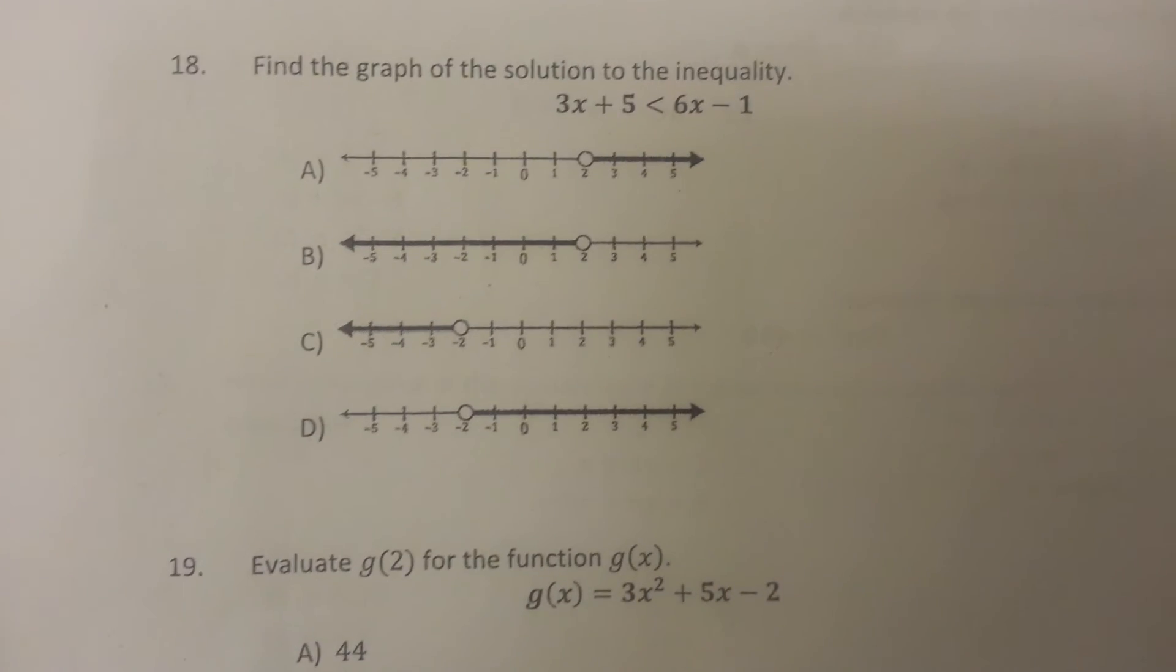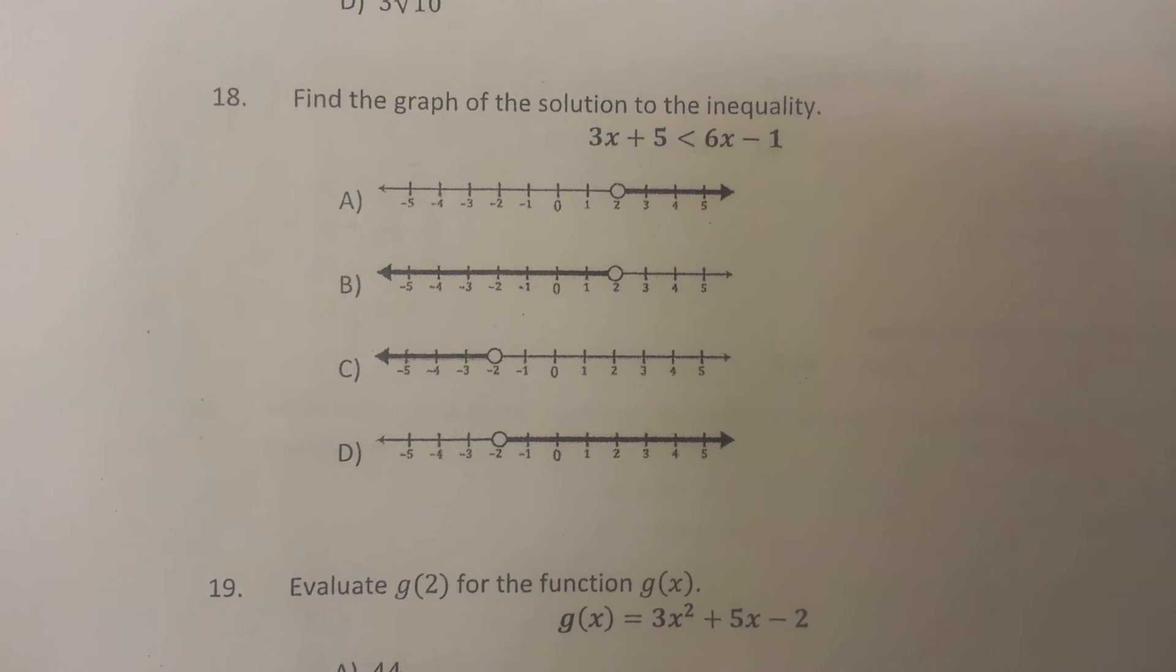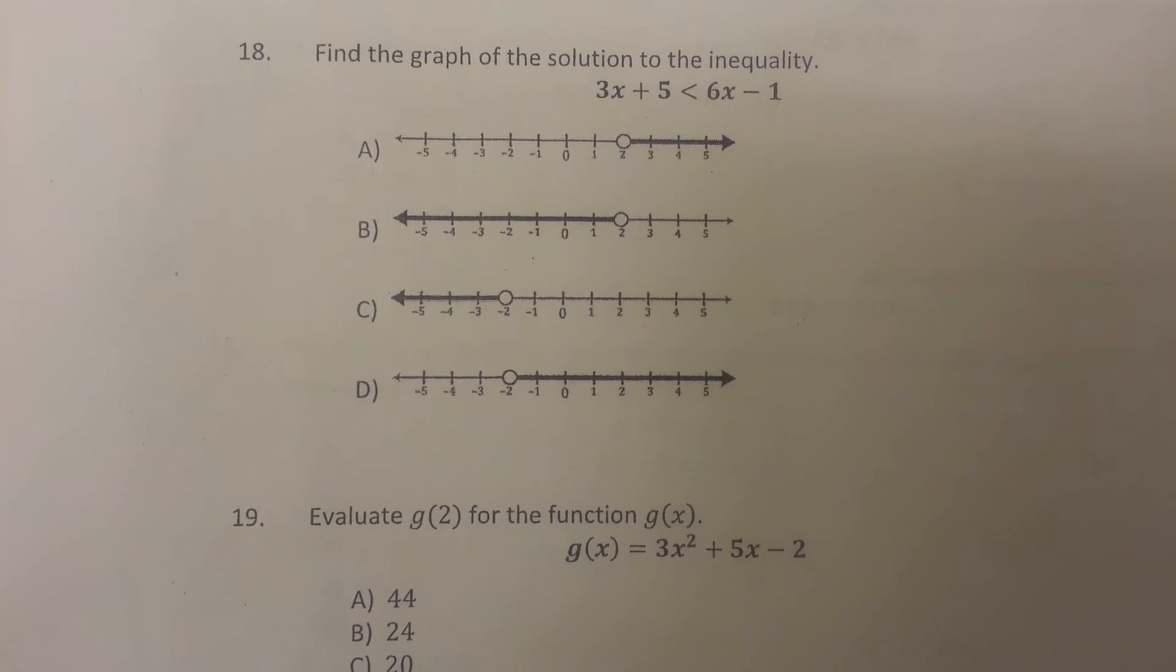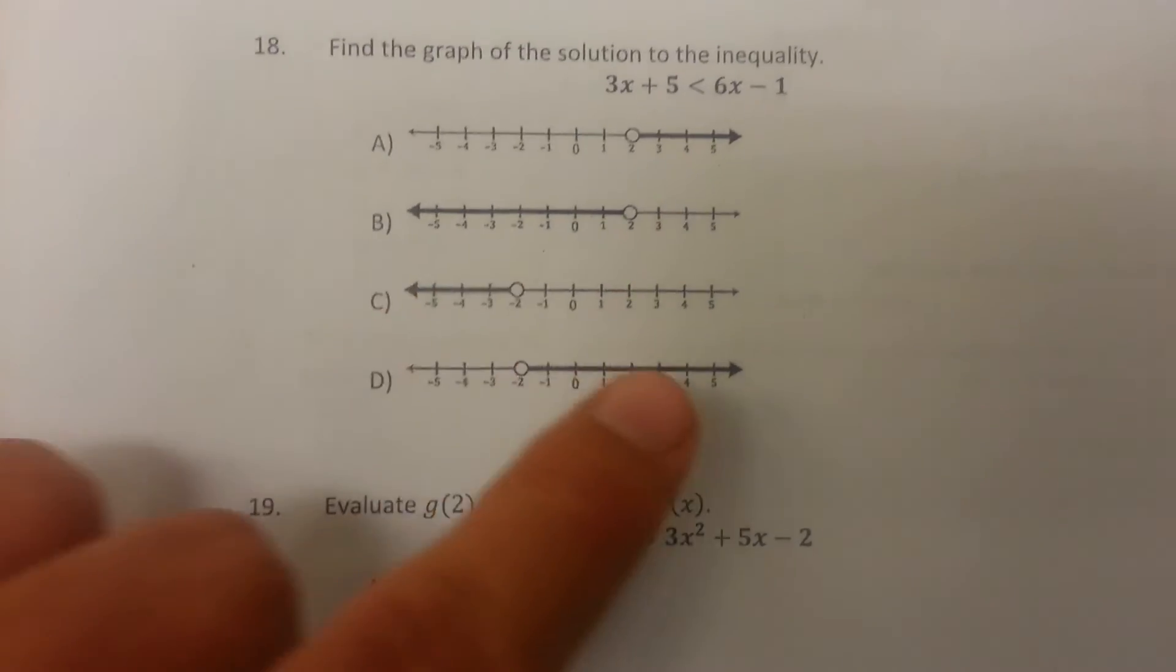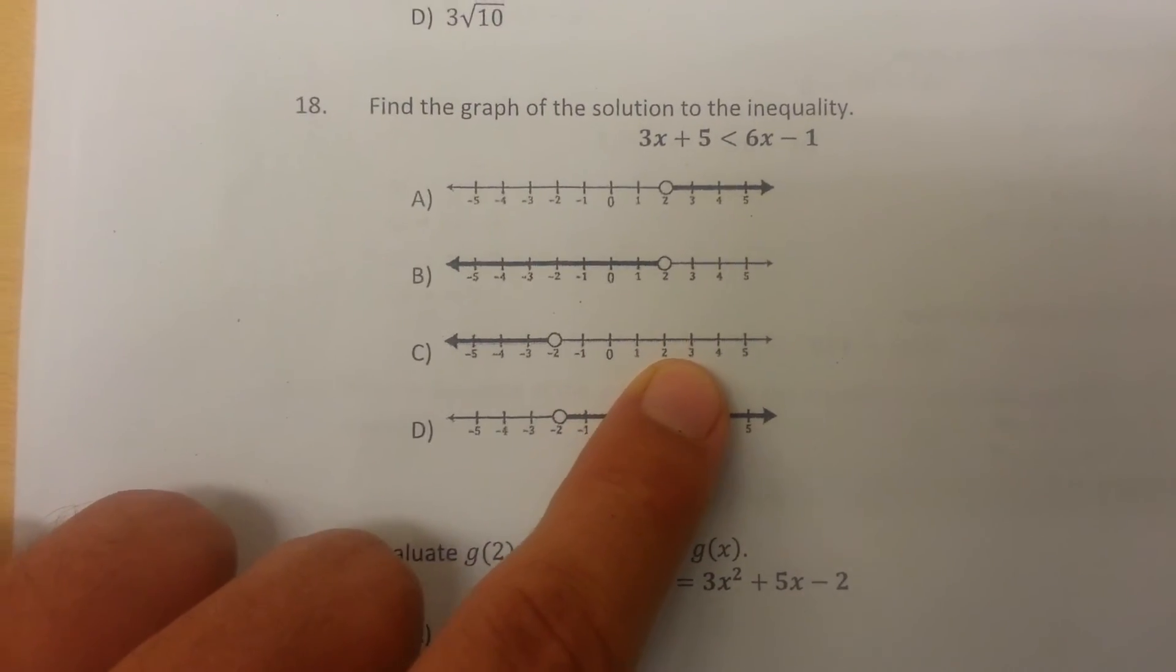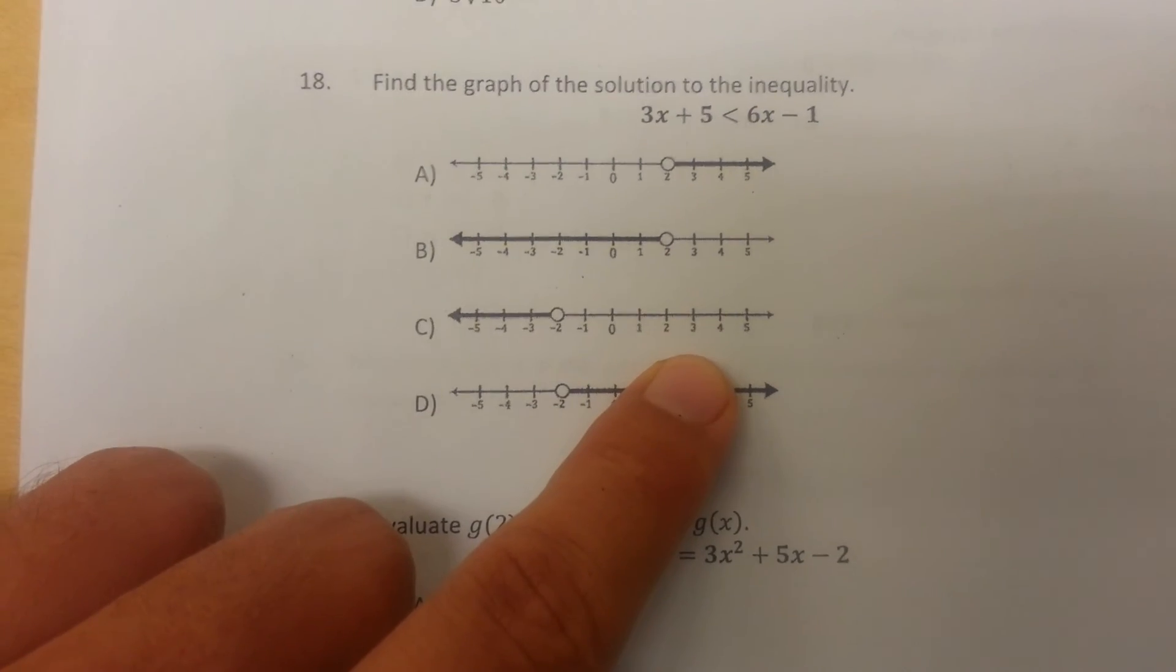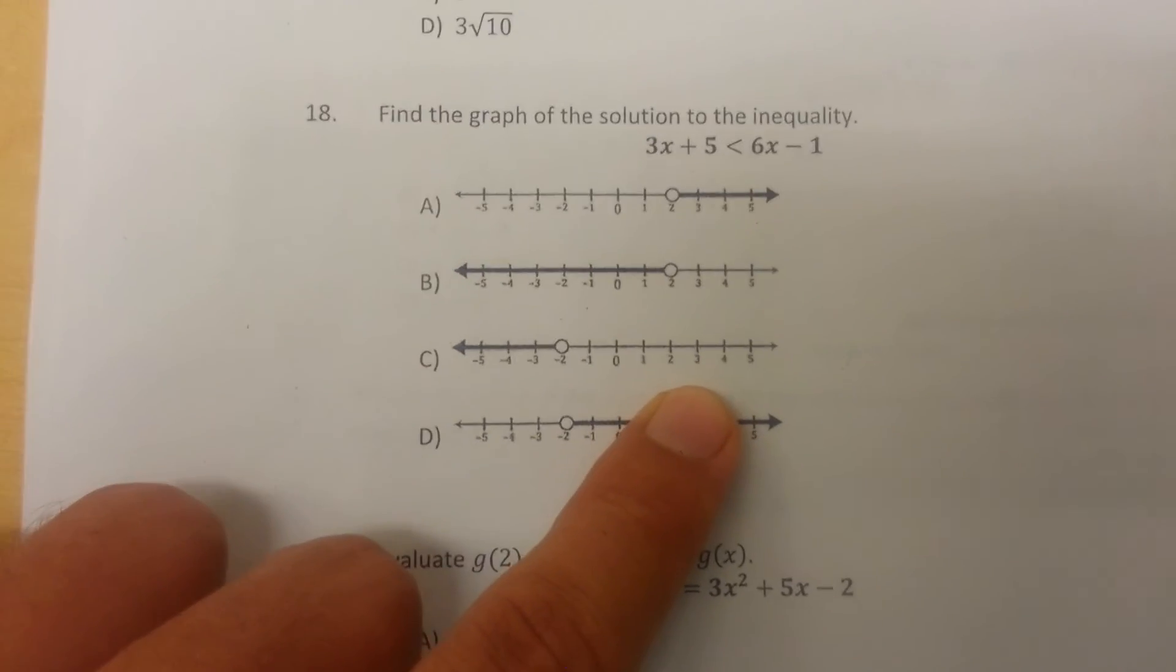So we narrowed it down to just A or C, and of course, we could plug in another value. Like for example, we can plug in three. If three works, then we know A is the answer. If three doesn't work, then we know that C cannot be the answer, depending on whether three works or not. So if three works, it must be A. If three doesn't work, then the answer must be C.